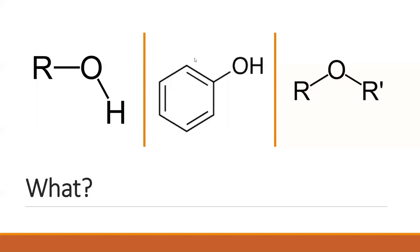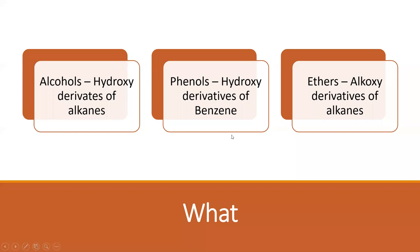If such a replacement happens, we get a structure called an alcohol. For phenol — you're familiar with benzene; if instead of OH we had H, it would be benzene. From benzene, if we remove one hydrogen and replace it with OH, that compound becomes phenol. For the last one, R-O-R': if we replace the hydrogen of an alcohol with another R group, we get the structure R-O-R', called an ether.